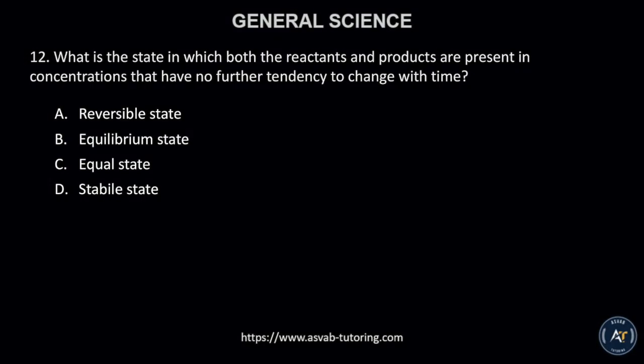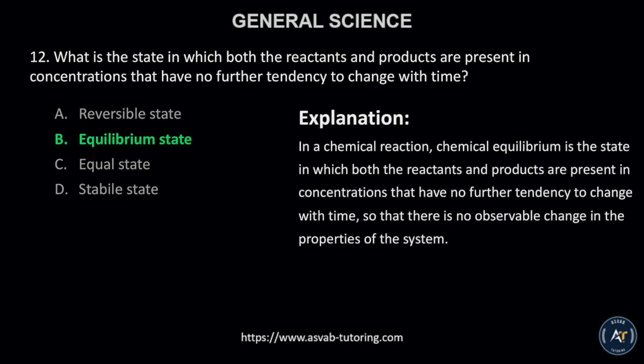Number 12. What is the state in which both the reactants and products are present in concentrations that have no further tendency to change with time? A. reversible state, B. equilibrium state, C. equal state, or D. stable state? The correct answer is letter B, equilibrium state. In a chemical reaction, chemical equilibrium is the state in which both the reactants and products are present in concentrations that have no further tendency to change with time, so there is no observable change in the properties of the system.